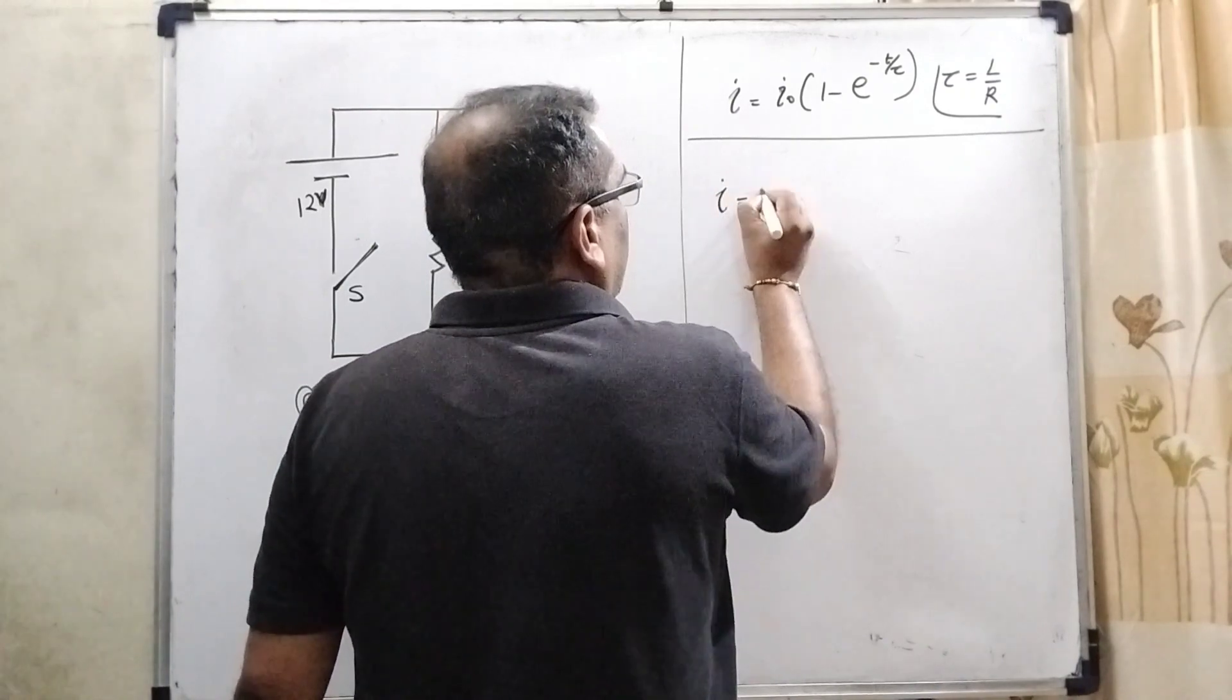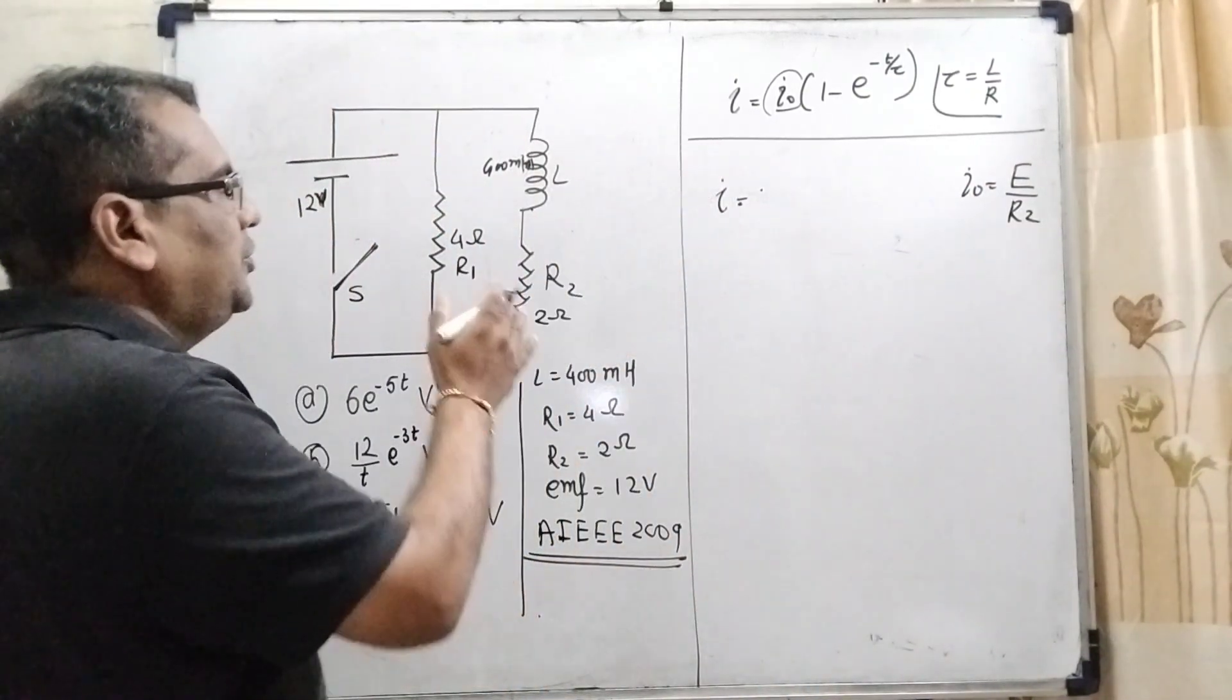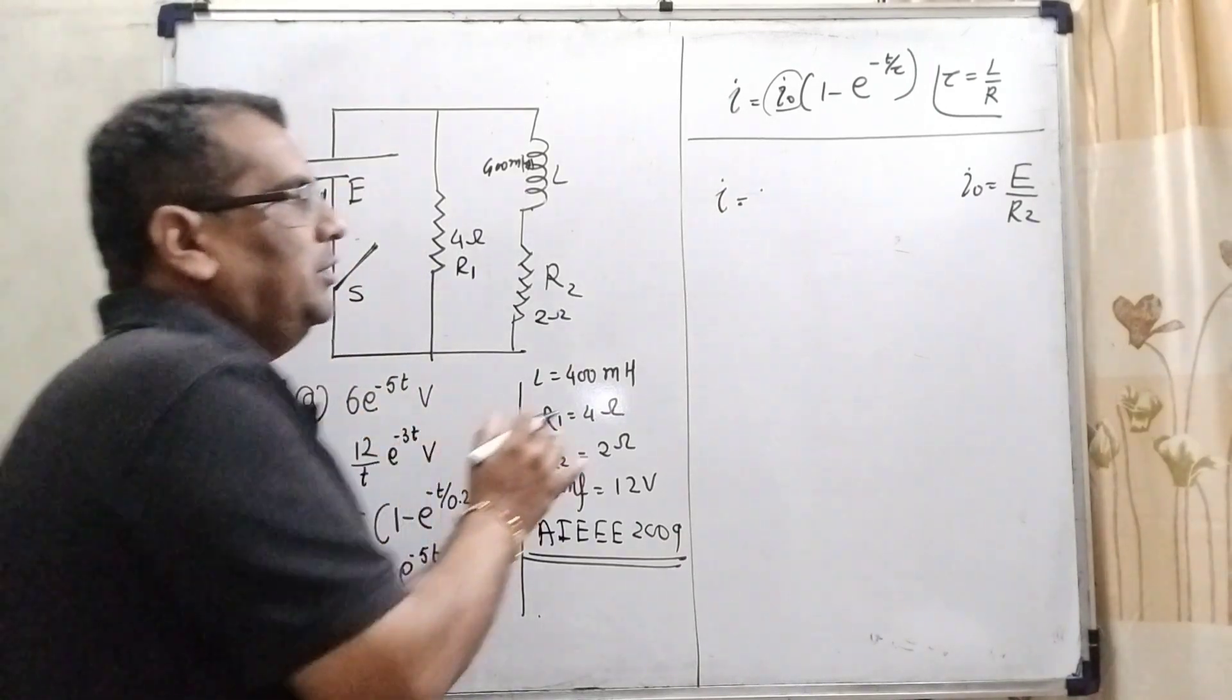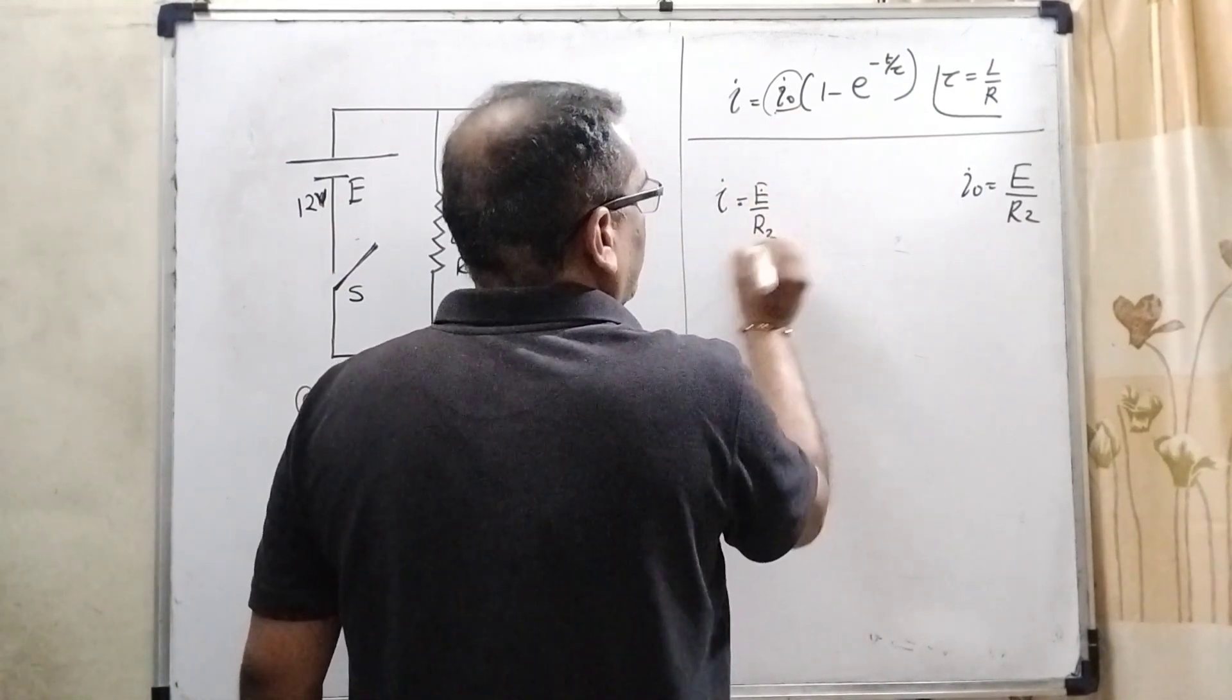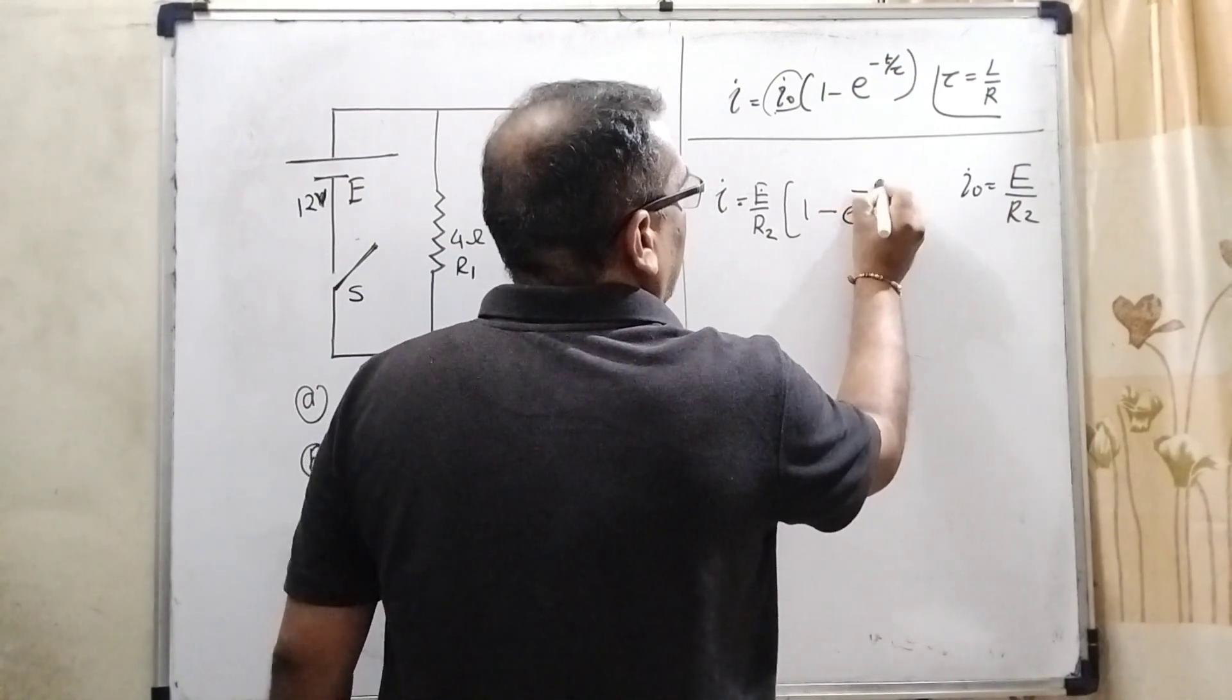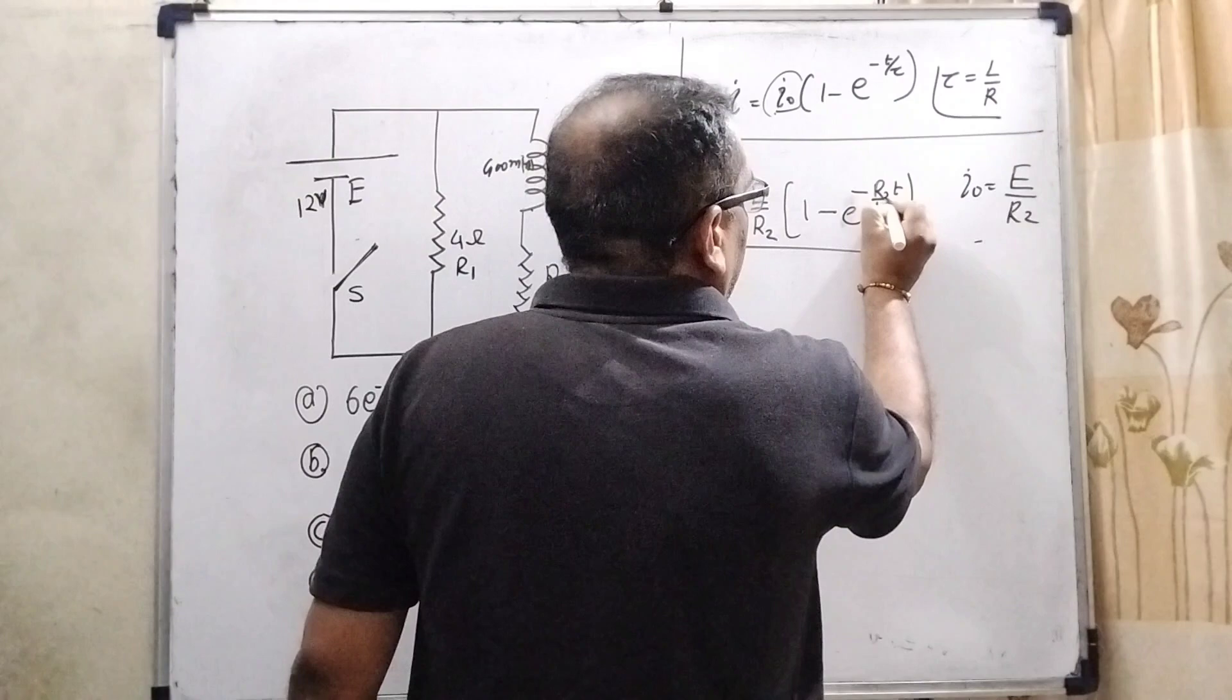Now substitute this value I equal to, in the place of I0, it can be written as E by R2. Why we have used here R2? Because the inductor is connected with R2, and here the battery EMF is 12 volt. So therefore, we have substituted this value in the place of I0: E upon R2, 1 minus E raised to power minus R T upon L. Here R is R2.